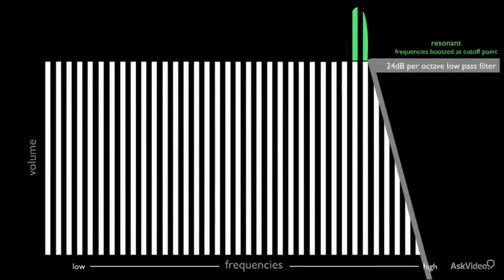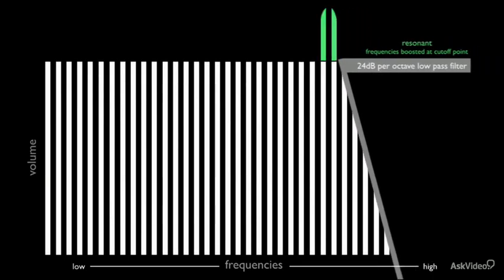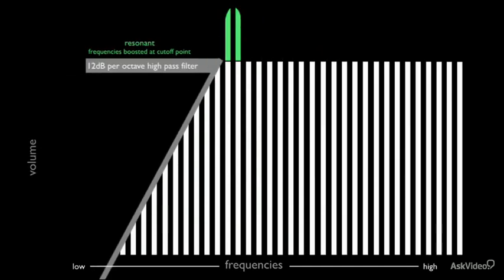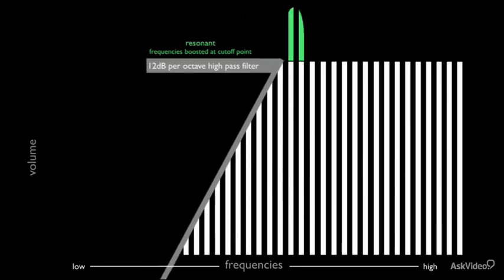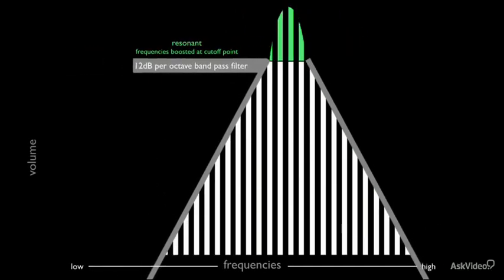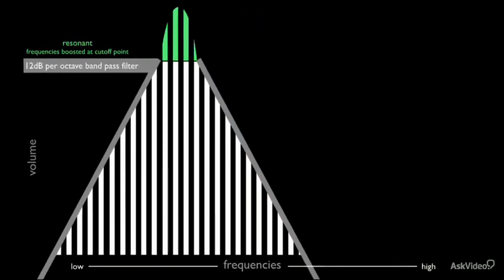Resonance is an effect where the frequencies at the cutoff point of the filter are amplified. This results in a change of timbre. Different filter types and filter slopes result in different sounding resonance.